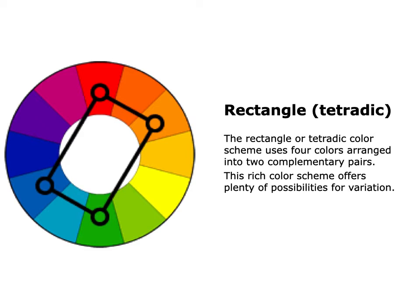Rectangular or tetradic is a color scheme considered very rich. It has a depth of color — not quite as evenly balanced as triadic, but still allowing those colors to enrich each other with a lot of variation. An example of a tetradic color scheme would be using the opposites blue and orange, but also using blue-violet, yellow-green, red-orange, and yellow-orange. Here's an example of a tetradic color scheme.